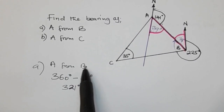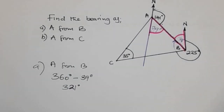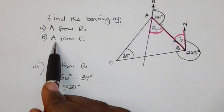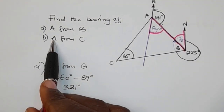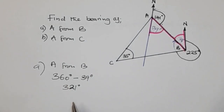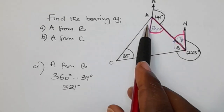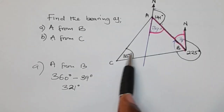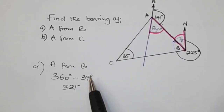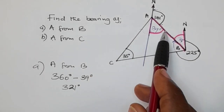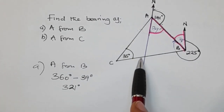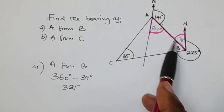So the bearing of A from B is 321 degrees. Now let's look at Part B — they want you to find the bearing of A from C. At this point, I mostly encourage people to first fill in all the angles of the triangle. This angle here has already been given; let's find the other angles.